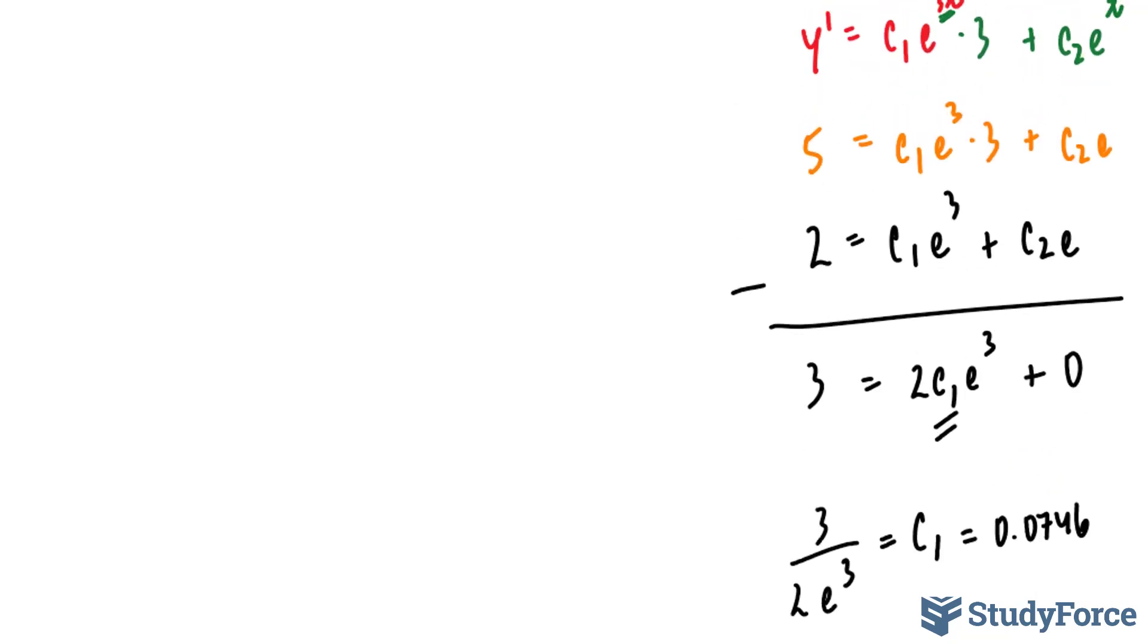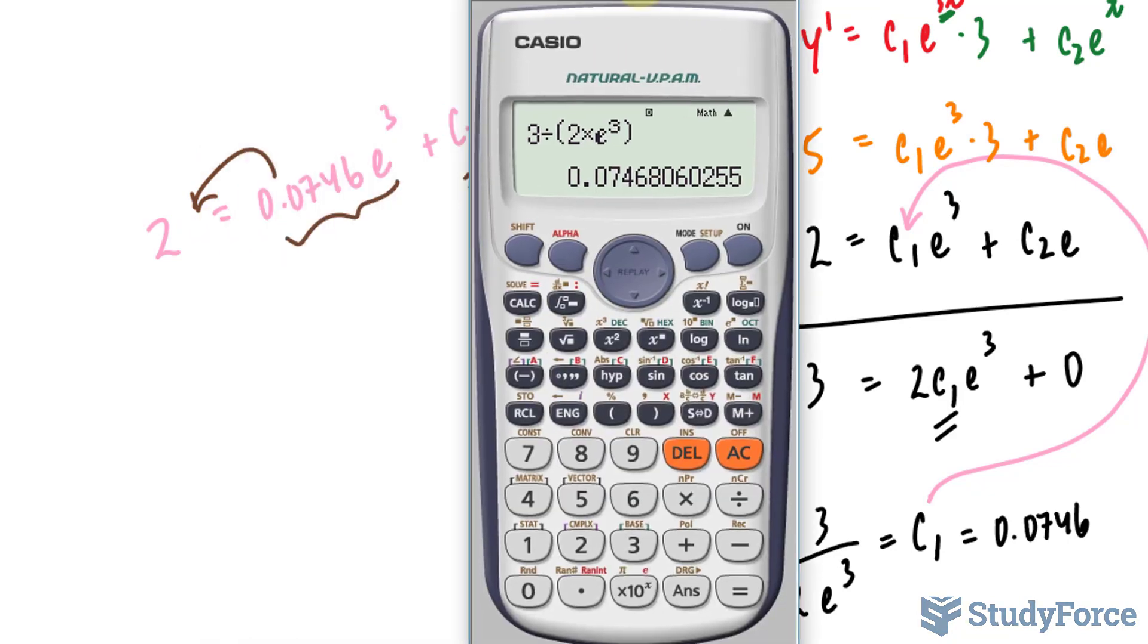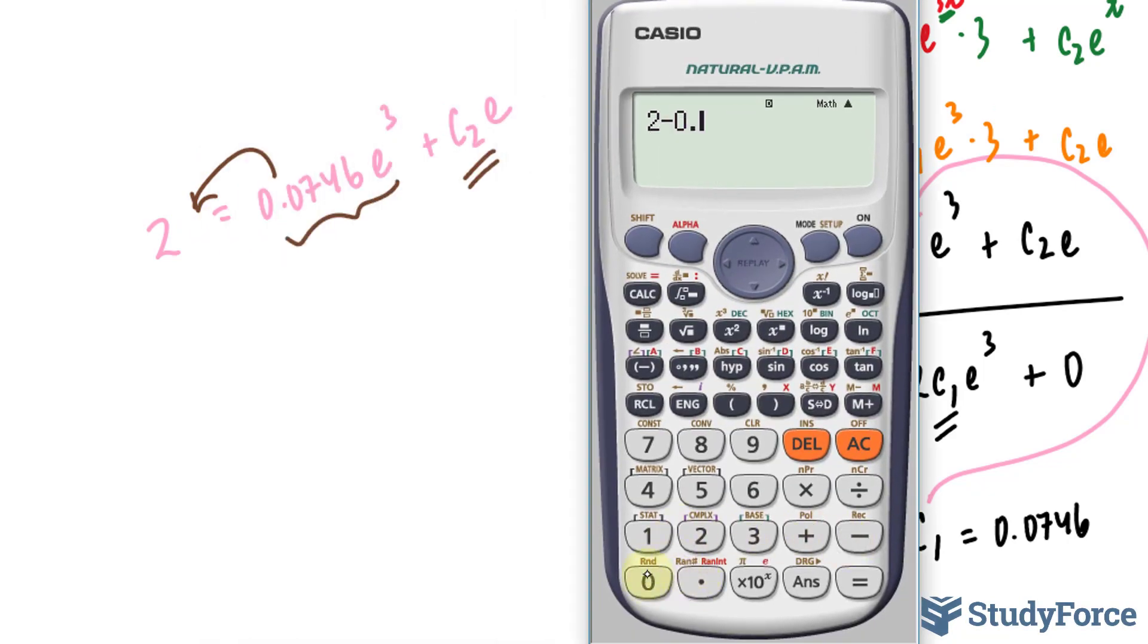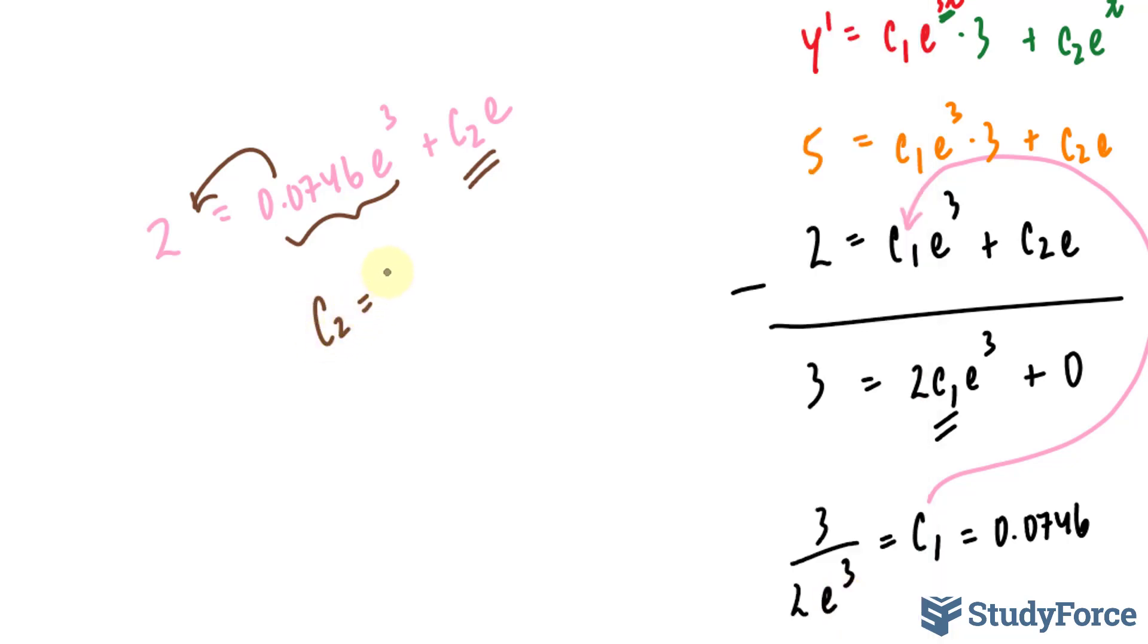I'll take this number now and substitute it either into this equation or this equation to find c subscript 2. I'll take this and place it right there. Doing my work over here, I have 2 is equal to 0.0746 times e to the power of 3 plus c subscript 2 times e. I need to find out what this is. So I'll take whatever this is equal to, to the other side and then divide both sides by e. 2 minus 0.0746 multiplied to e to the power of 3 divided by e and we get 0.18. c subscript 2 is 0.18.